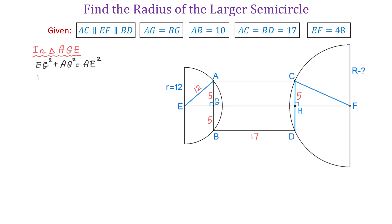So we will write EG squared plus 5 squared equals 12 squared. Then EG squared equals 144 minus 25, and 144 minus 25 is 119. Then EG will be equal to square root of 119, which is approximately 10.91.